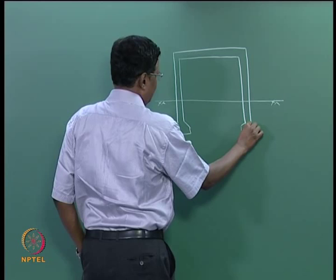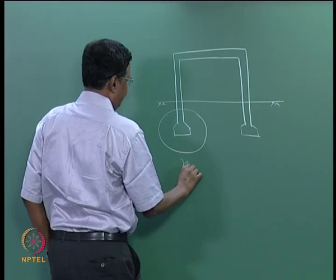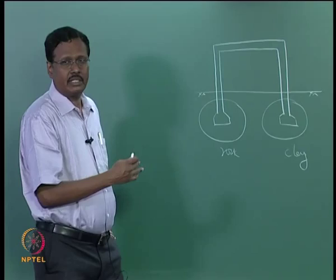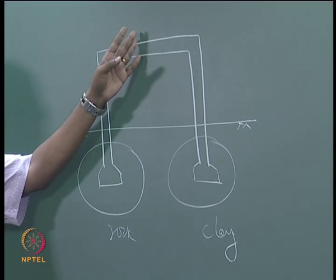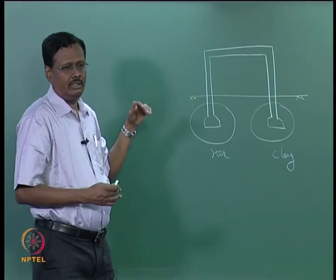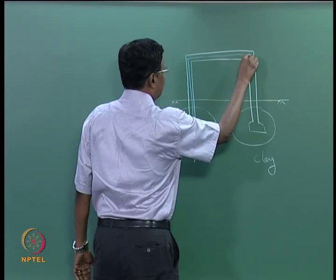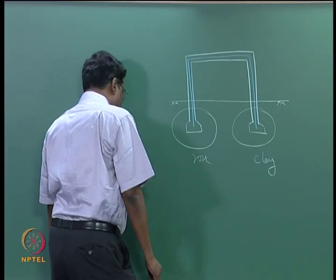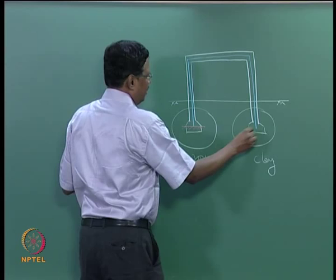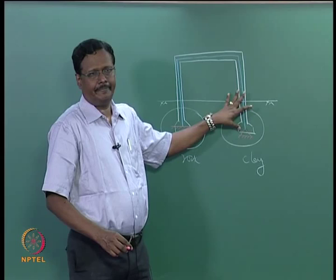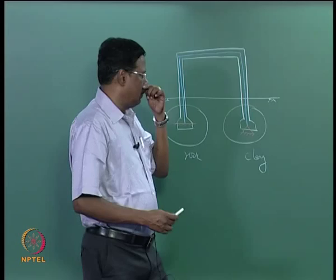Suppose you have rock on one side and clay on the other — it is generally not possible but sometimes it is. This is a portal frame for a building: two columns, a beam, spacing, and a slab on top. Take the center line of the structure. Since it is a clayey soil it will not give sufficient fixity, so assume one end hinged and the other fixed.